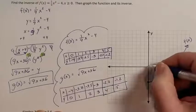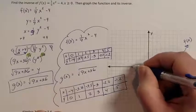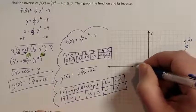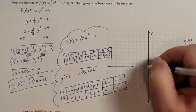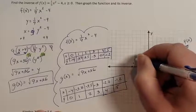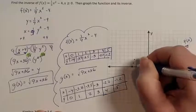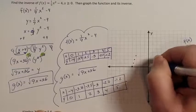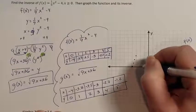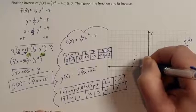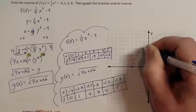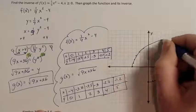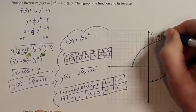Now my g of x function. Negative 4, 0. Negative 3.8, 1. Negative 3.5, 2. Negative 3, 3. Negative 2.2, 4. And negative 1.2, 5. This is my g of x function.